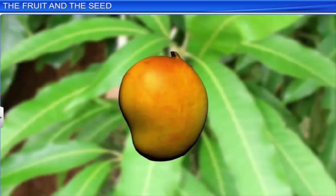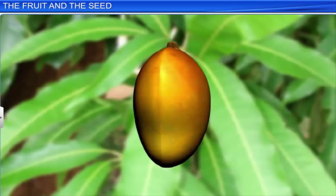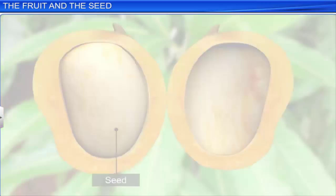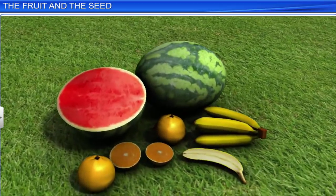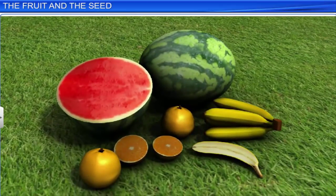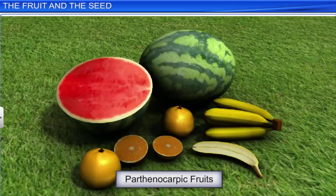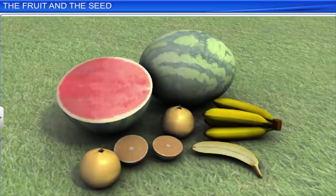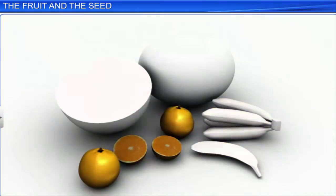In biology, a fruit is a fertilized ovary with seeds. However, certain fruits are formed without fertilization of the ovary and are therefore seedless. Such fruits are called parthenocarpic fruits, such as seedless watermelon, banana and orange.